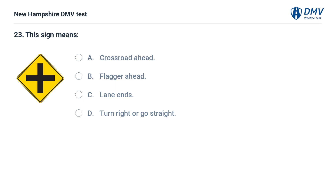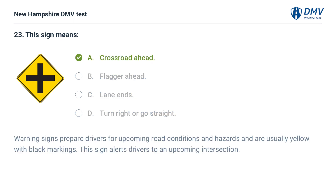This sign means: A) crossroad ahead, B) flagger ahead, C) lane ends, D) turn right or go straight. The answer is A, crossroad ahead. Warning signs prepare drivers for upcoming road conditions and hazards and are usually yellow with black markings. This sign alerts drivers to an upcoming intersection.